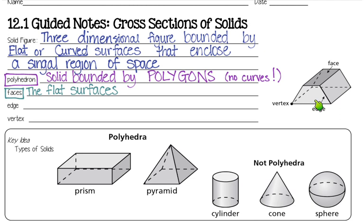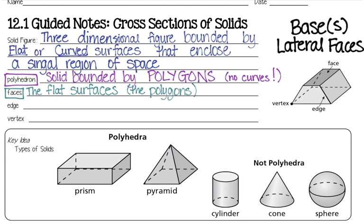Right here, this trapezoid is a face. This parallelogram is a face. This one up on the top is a face. All of these are faces. But there are two different categories of faces: bases or lateral faces. They're all faces, but some of the faces are bases, and some are lateral faces.